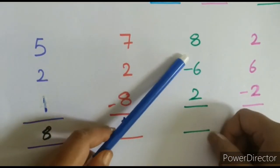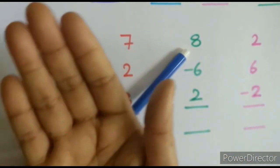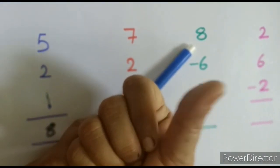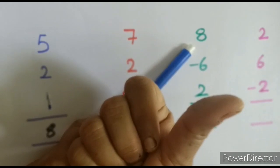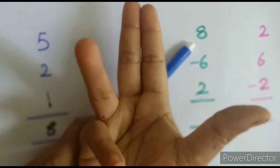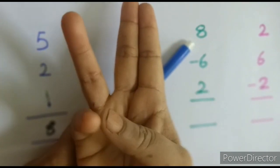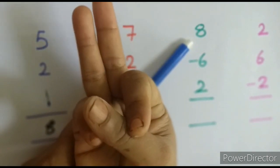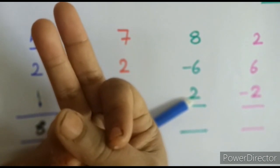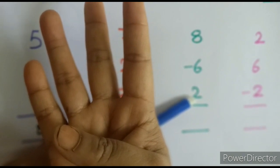Next example: for 8, open the thumb which represents 5, then 3 more fingers: 6, 7, 8. Then minus 6 — close the thumb first, then 1 more finger. Then plus 2 — open 2 more fingers: 1, 2. The answer is 4.